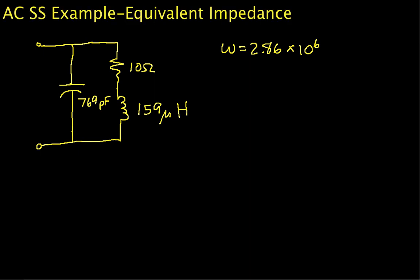Welcome to this video on computing AC steady-state equivalent impedance. In this video we will take the circuit that is shown and compute an equivalent impedance for the frequency of 2.86 times 10 to the 6 radians per second. Now one point that I need to make, we are not going to be computing any phasors.